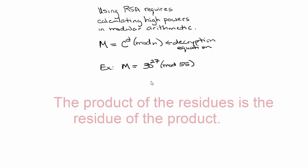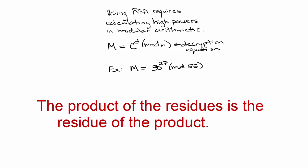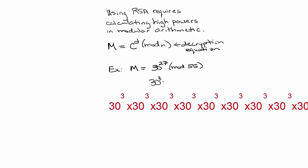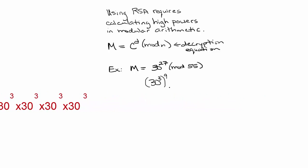But luckily, we know that the product of the residues is the residue of the product. Let's see what that means. In this example, we're going to break up the value 30 to the 27th power into smaller, more manageable pieces. We know that 27 is divisible by 3, so we could reasonably break this up into 30 to the 3rd power 9 times, or in other words, 30 to the 3rd to the 9th power mod 55.